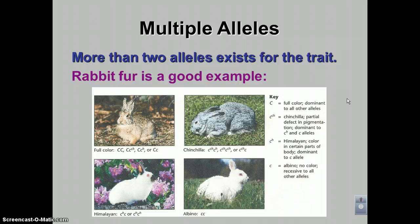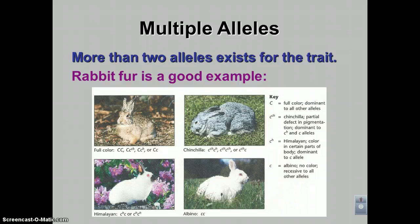Multiple alleles deals when there's more than two alleles for that trait. So there could be three, four, five, or whatever. And rabbit fur is a perfect example. Very much like we did in codominance, you often use superscripts for this one.